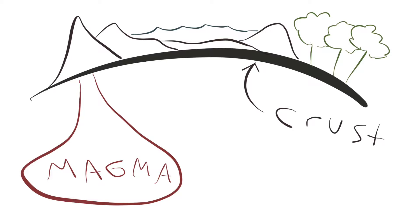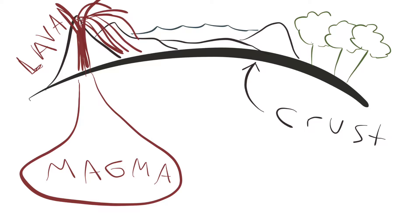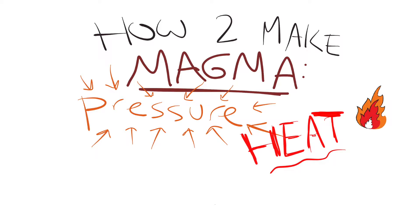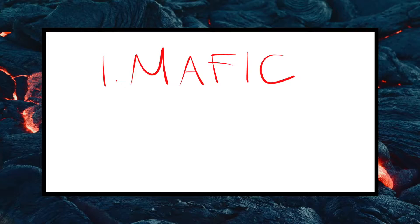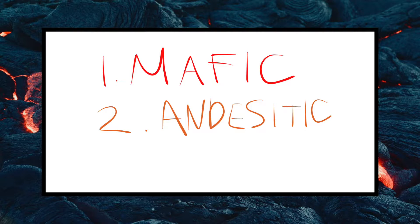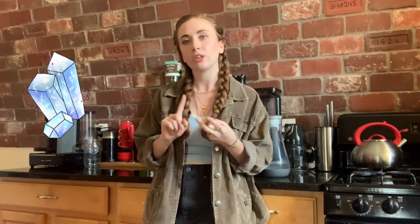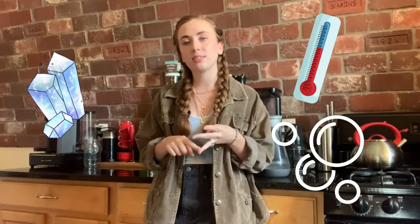Magma is molten rock beneath the earth's surface, and once it comes up to the surface, we call it lava. The main factors responsible for the formation of magma are pressure, heat, and the concentration of gases. There are different types of magma because the earth is so complicated. We have three different types: mafic, acidic, and felsic. The way we separate them is by their mineral composition, their temperature, and the presence of gases.